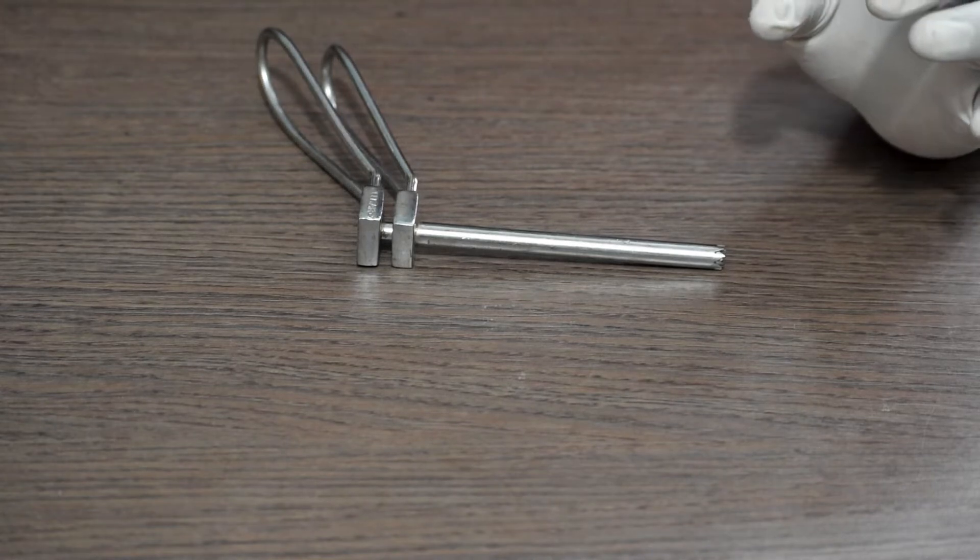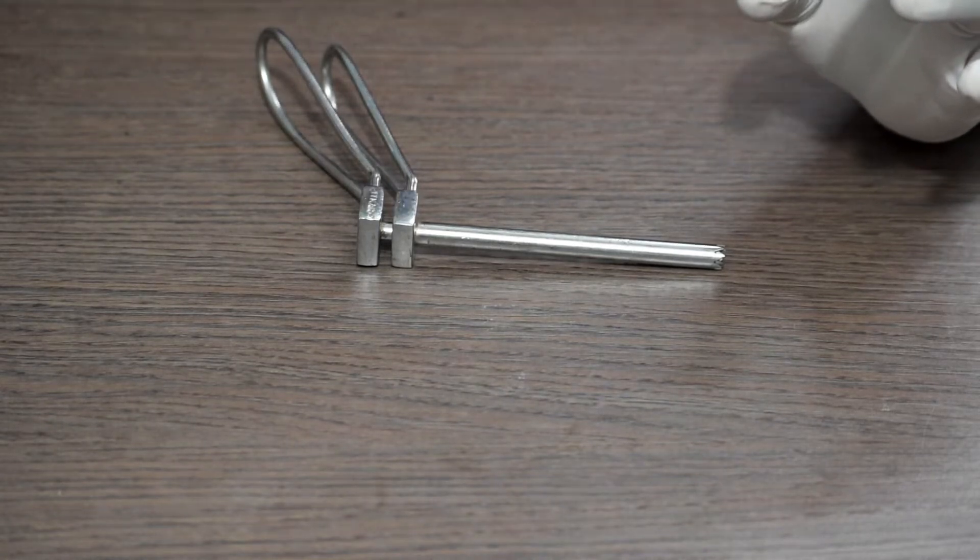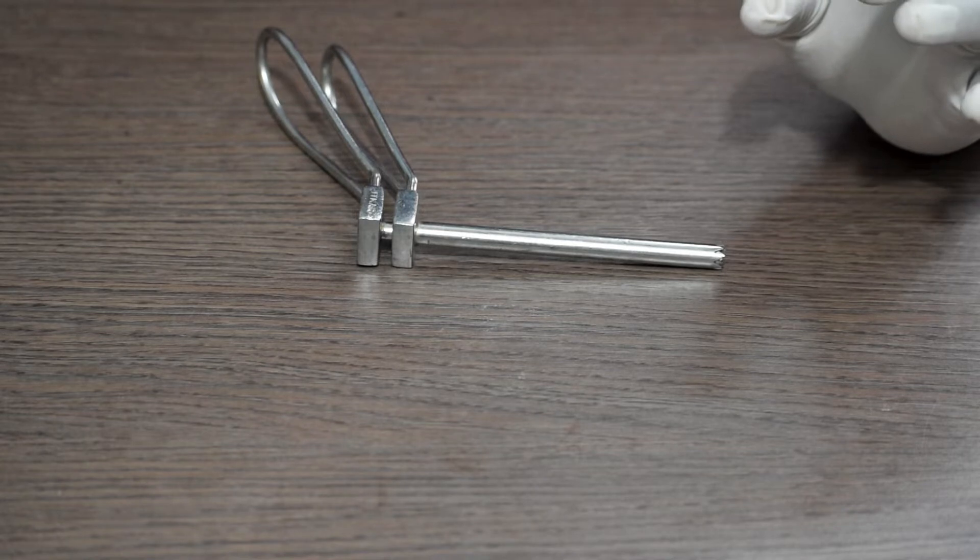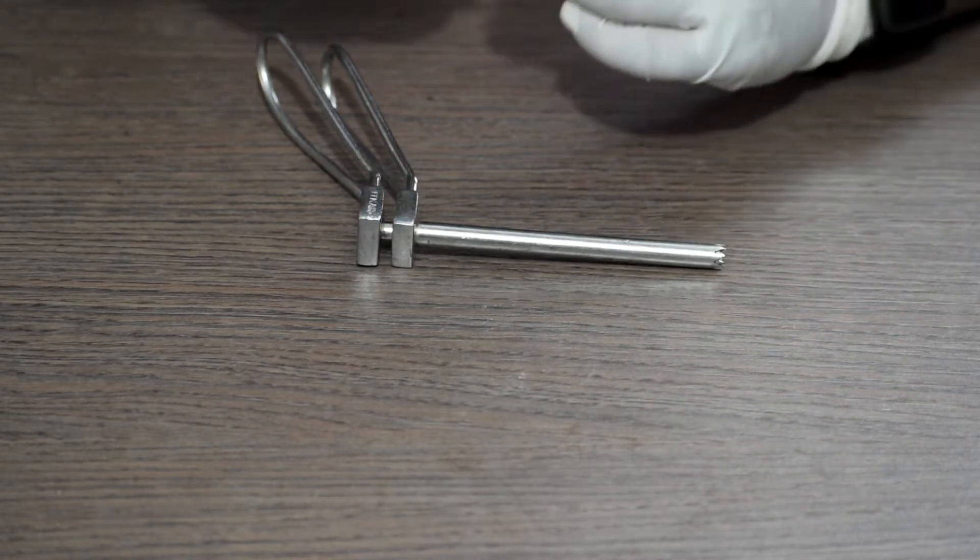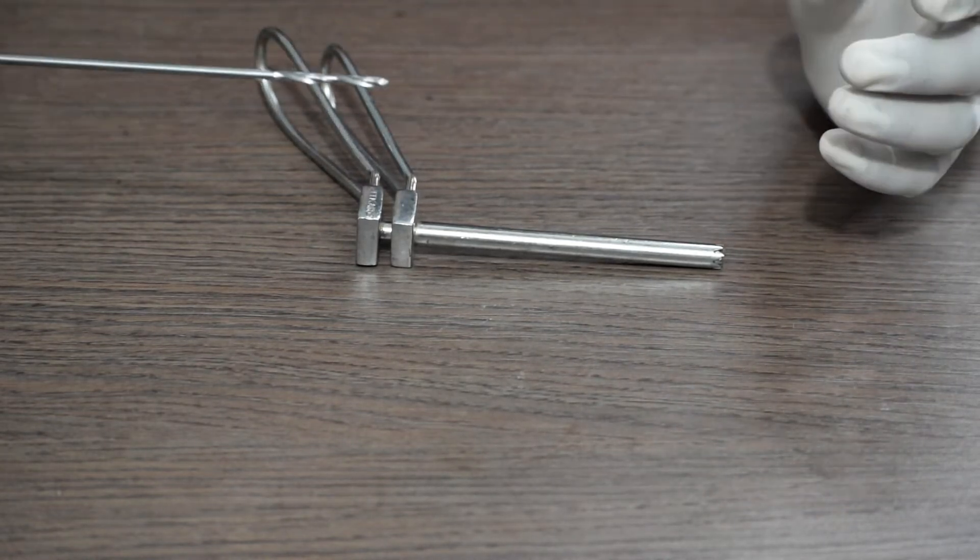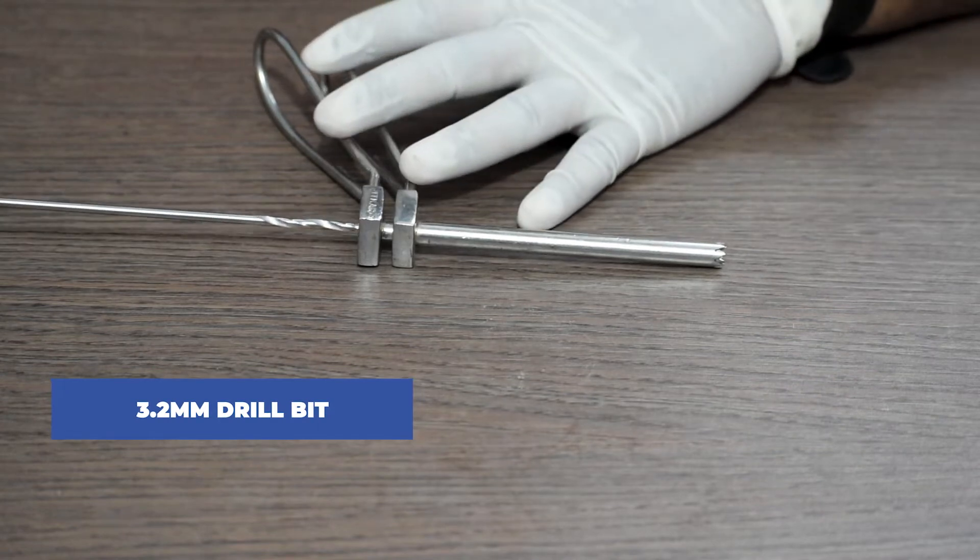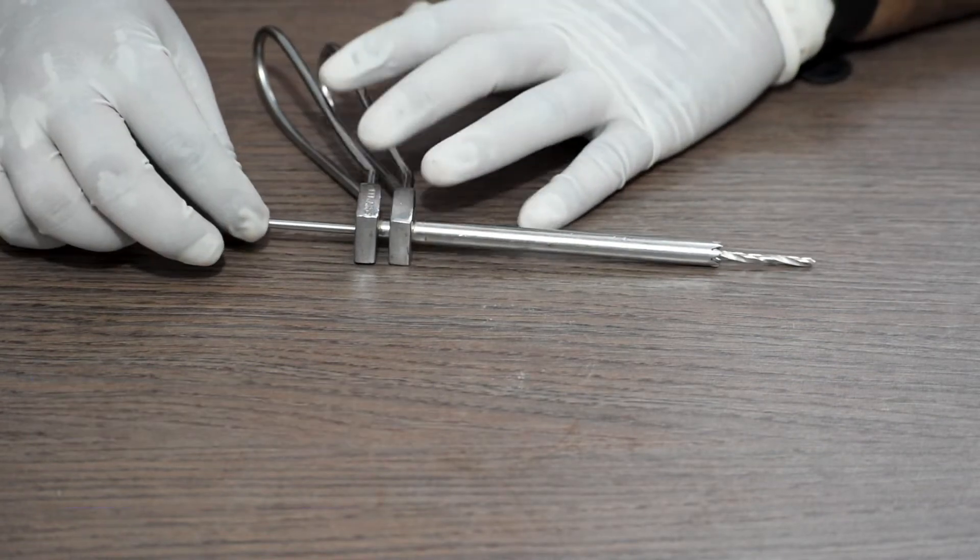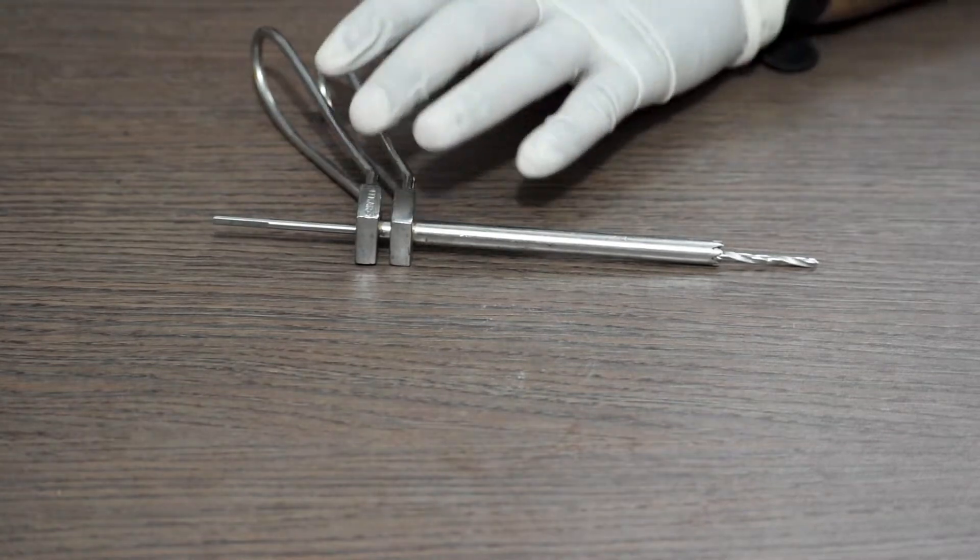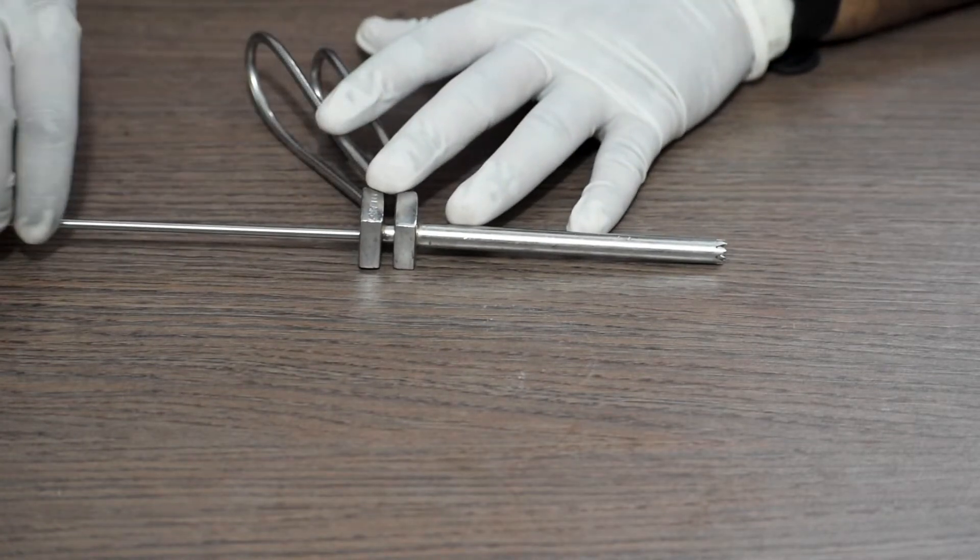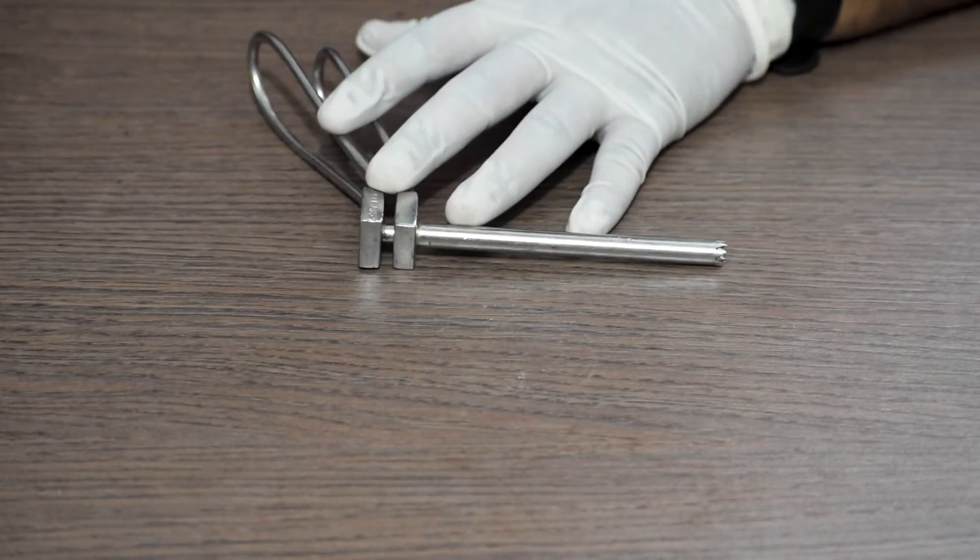If the surgeon decides to use an external fixator in order to fix the TVR shaft fracture, first we will use a 3.2 mm drill bit. After this, we remove the drill bit along with the drill guide.